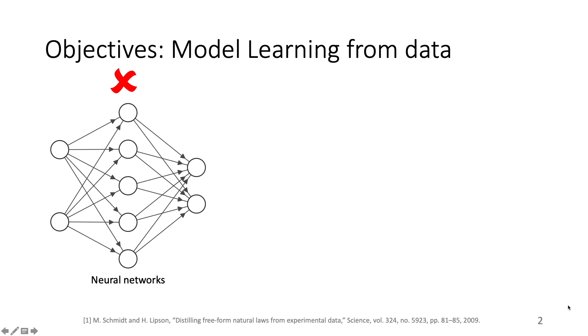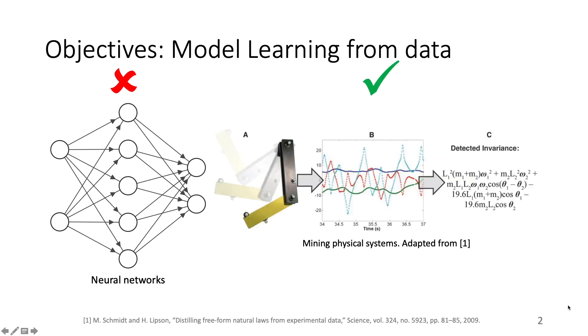In this research, we would take a completely interpretable approach so that the discovered model is transparent and one can answer why when investigating it. Apart from that, we aim to determine the Lagrangian as it compresses a multidimensional model into a single scalar and allows the calculation of dynamics with the Euler-Lagrangian method.